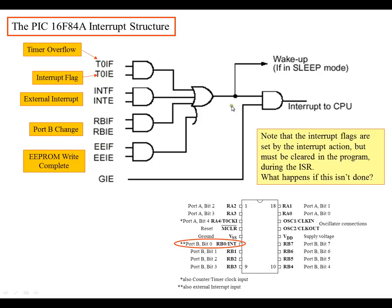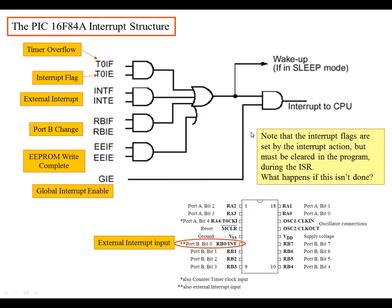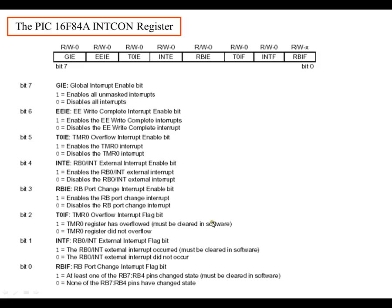A lot of these things you don't want to continuously poll or continuously check — whether port B has changed or whether your EEPROM is done writing. You just want to execute your code, and if an event occurs you want to cause the microprocessor to stop. It's equivalent to tapping the microprocessor on the shoulder and saying, 'I need you to service me.' If that's something your project needs, you'll want to investigate more on what an interrupt is and how they work. You also have a global interrupt enable and an external interrupt input, controlled by a register called INTCON — the interrupt control register.